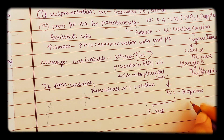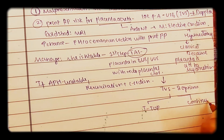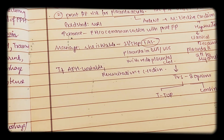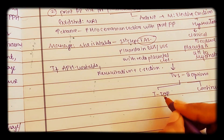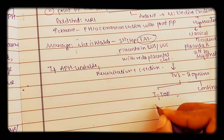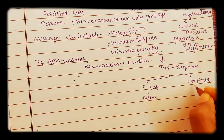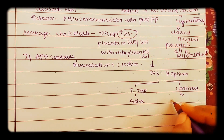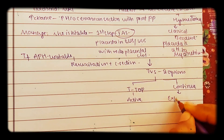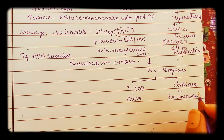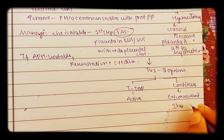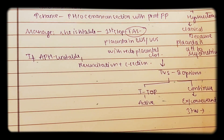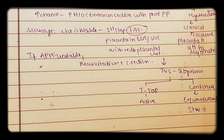We always want to save the mother compared to the fetus. If there are unstable vitals, we need to terminate the pregnancy — this is called active management. If you want to continue the pregnancy, especially when it is not causing harm to the mother, this is called expectant management or conservative management. The aim is to take the pregnancy till 37 weeks so that the fetal lungs will mature. The principle is: never put the mother's life at risk.